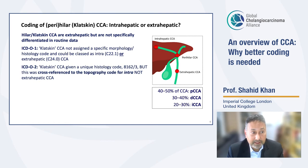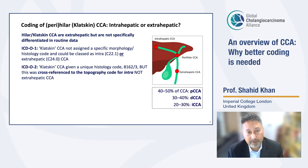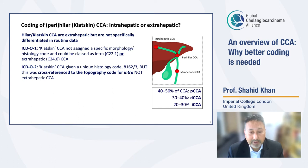In ICD-O2, Klatskin cholangiocarcinomas were given a unique histology code, but this was cross-referenced to the code for intra-, not extra-hepatic. And remember that ICD-10, the main ICD system, still did not have a perihilar code. The relevance of this is that perihilar cholangiocarcinomas are the largest subgroup of the three subtypes, as seen in clinical practice and published case series.